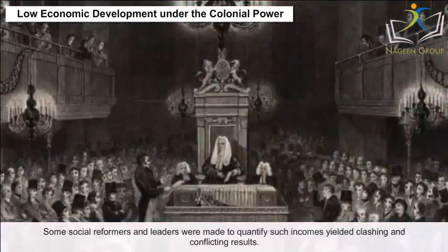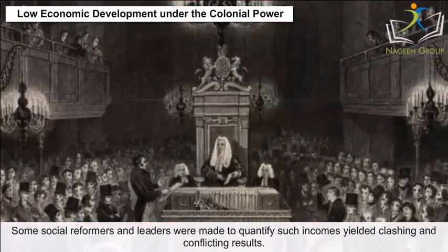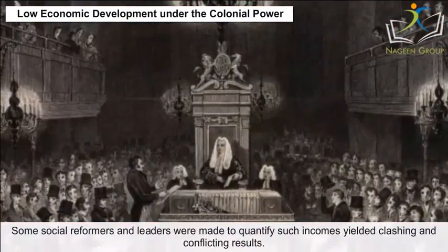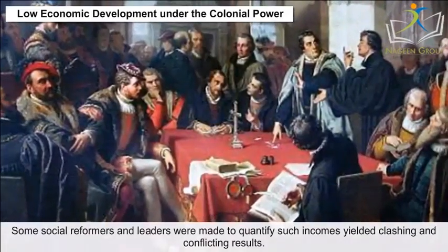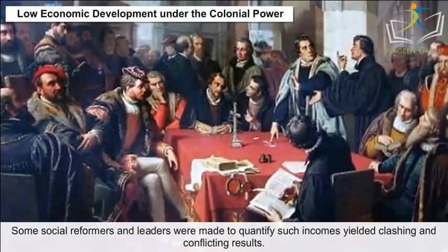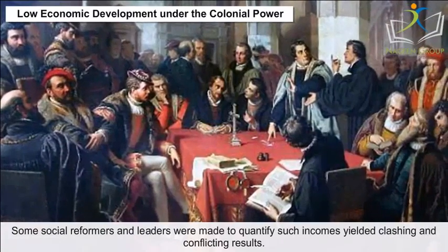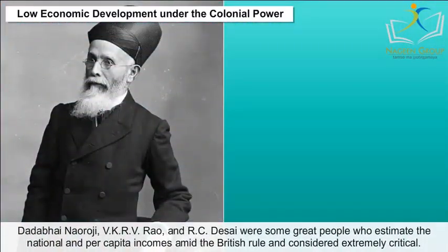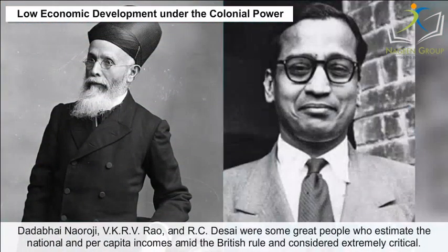Some social reformers and leaders attempted to quantify national income, though results were conflicting. Dadabhai Naoroji, V.K.R.V. Rao and R.C. Desai were among those who estimated the national and per capita incomes during British rule, and their findings were considered extremely critical.